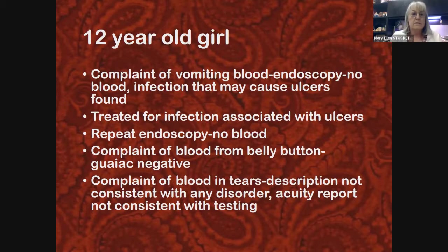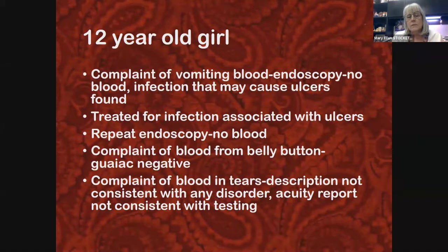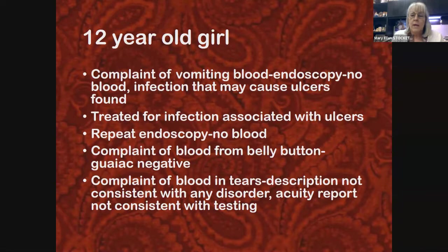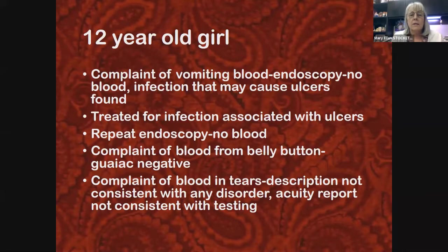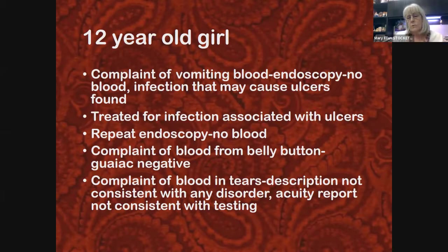The first case is a 12-year-old girl who was in the custody of an adult cousin. One of the things we'll talk about is that most of these perpetrators are women, and this was no exception — in fact, I've never done a case where the perpetrator wasn't a woman. She complained that she was vomiting blood, so she was referred to gastroenterology.